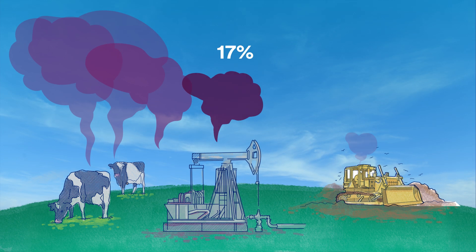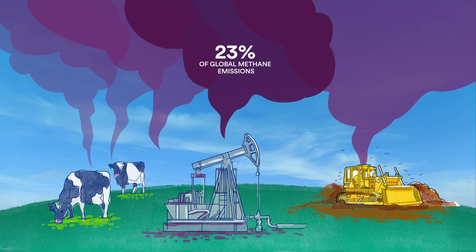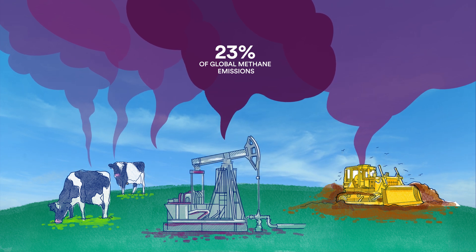The oil and gas industry is responsible for 23% of global methane emissions, making it one of the highest emitting industries of the global economy.